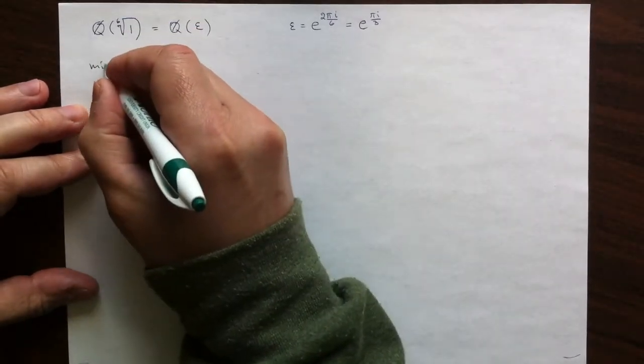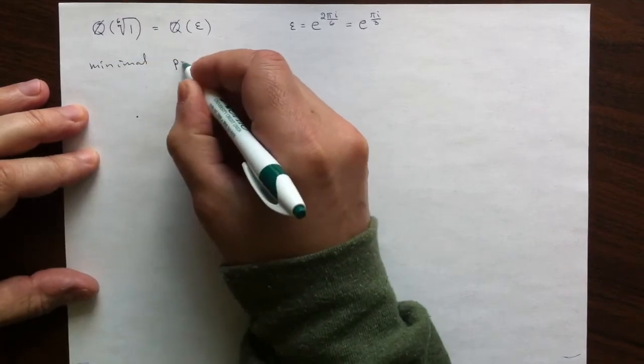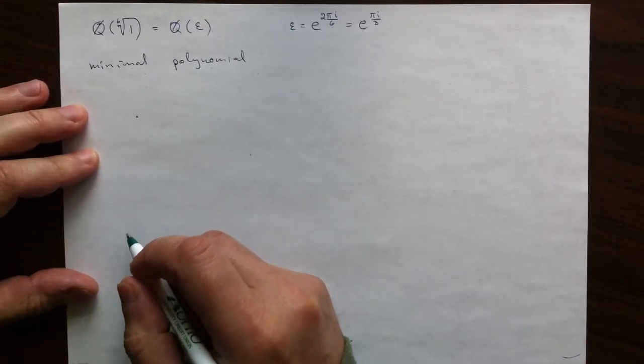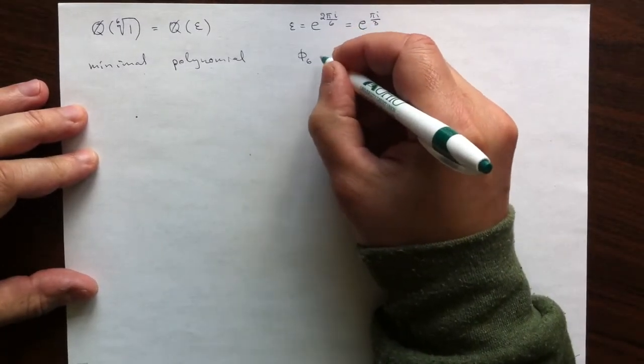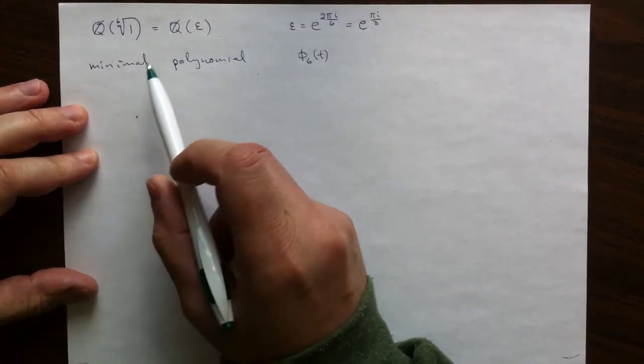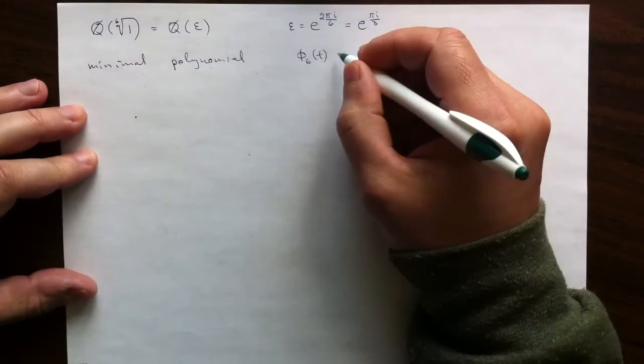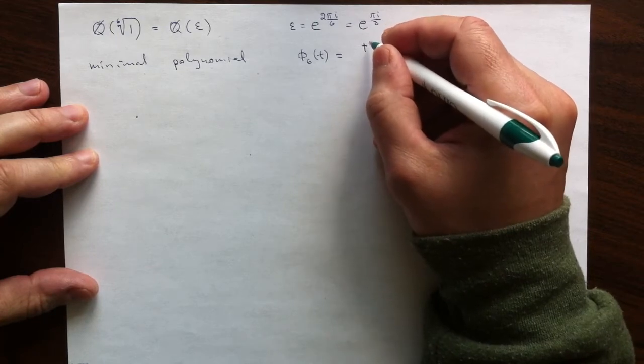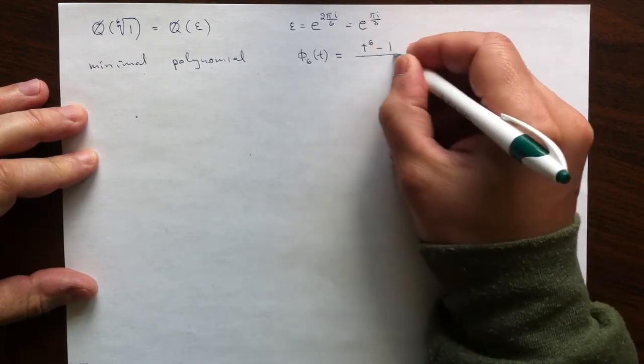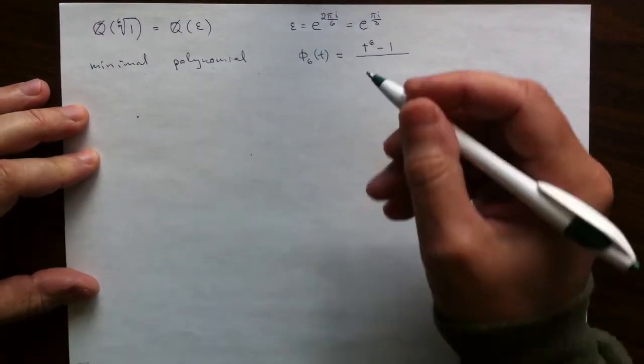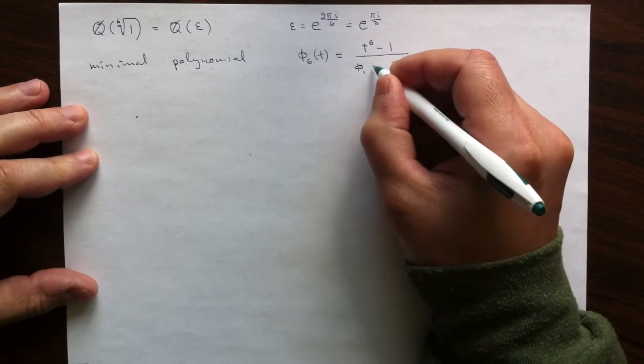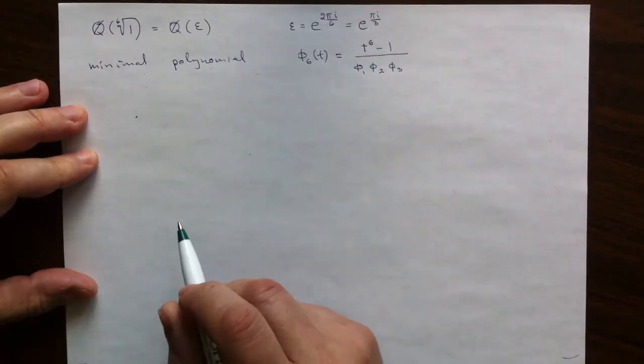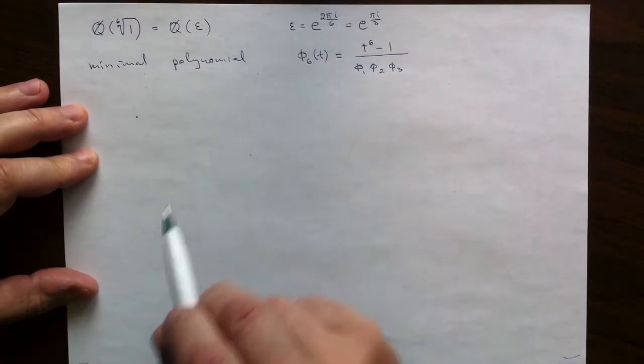The minimal polynomial of this root of unity is the cyclotomic polynomial number 6. We need the minimal polynomial to describe effectively the elements in this field. So the minimal polynomial is the cyclotomic of level 6, and that is by the induction process the ratio of t to the 6 minus 1 to the product of all smaller cyclotomic polynomials. Smaller in the multiplicative sense, so the labels have to be divisors, proper divisors of 6, not equal to 6.